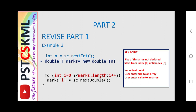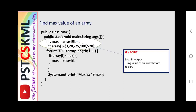Now we move on to finding the maximum value of an array. Our class name is Max. Public static void main, String args. Before we start, we set the maximum value as array[0] — we assume the first index is the maximum. The array values are: 3, 20, 90, 25, 100, and 578. We loop from index 0 until array.length, using i++.